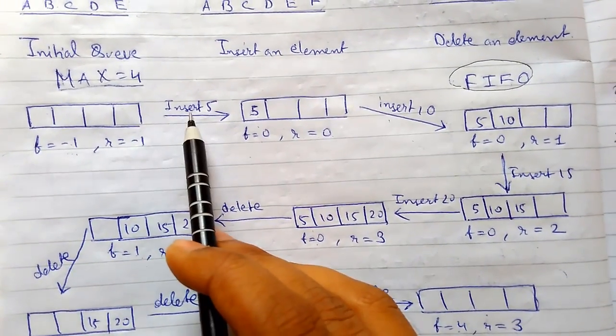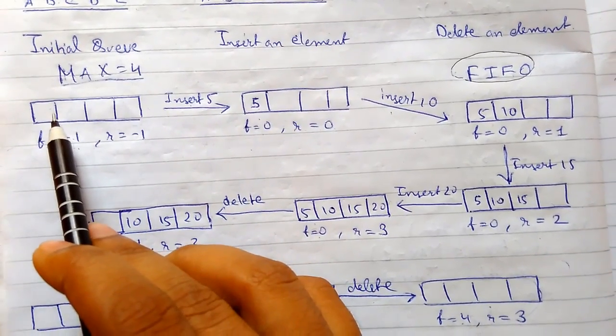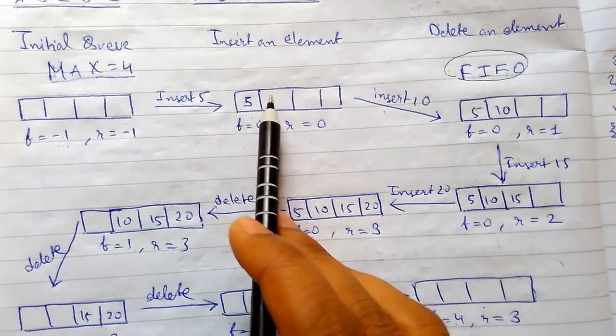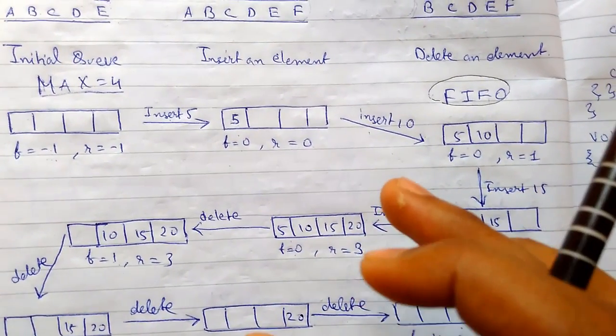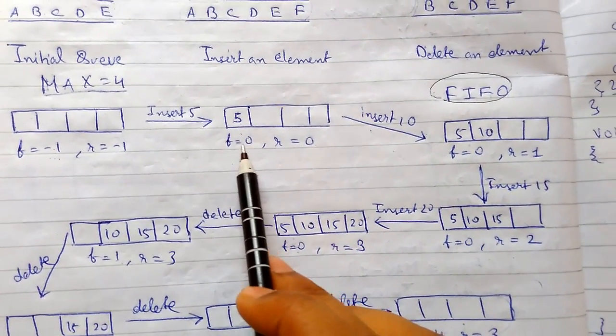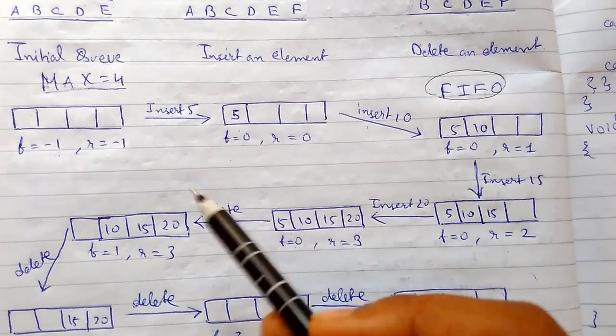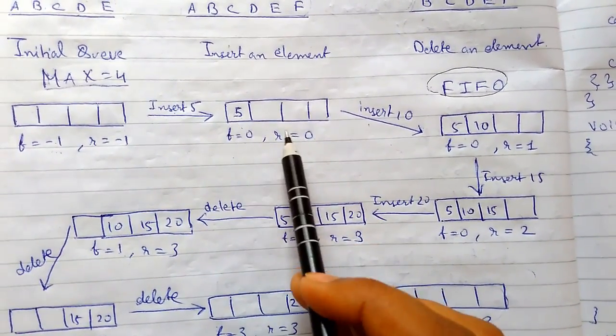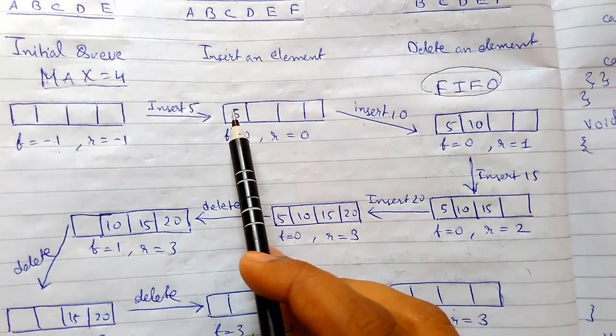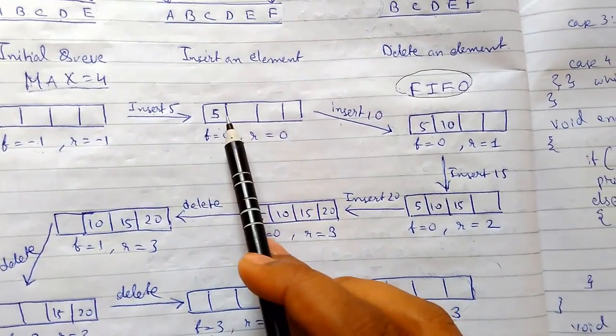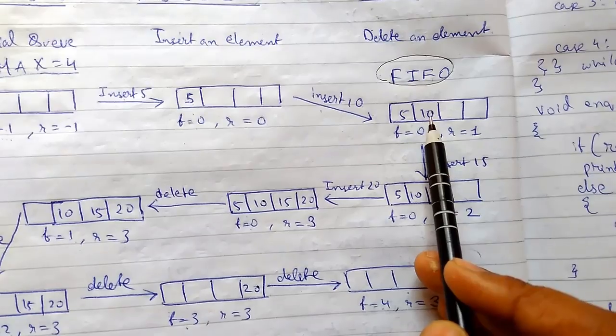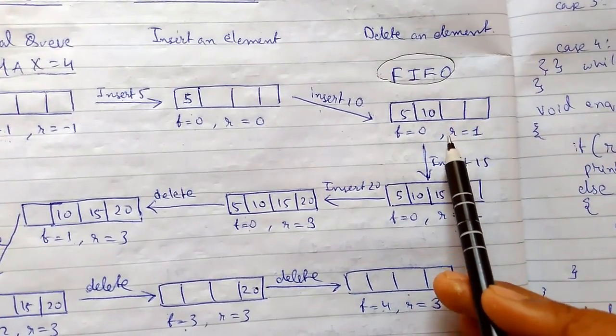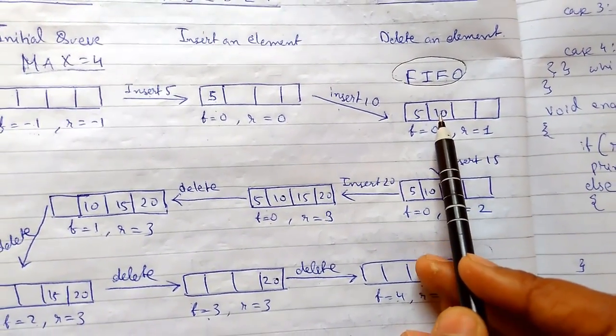When you are inserting an element, insertion would take place from this end. This is the first special case. I will explain when I write the function for insertion. Here both front and rear have been changed to 0. They have been updated and the insertion has taken place. Now we will insert another element like insert 10.